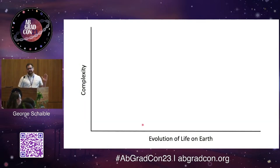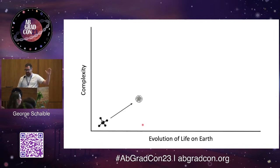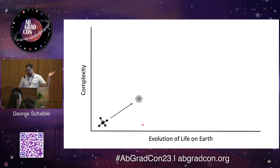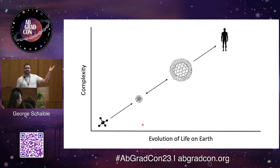Where I like to start is generally when we think about the evolution of life on Earth, we can think of it as an increase in complexity as life continued to evolve. This is an oversimplification, but thinking of it as molecules coming together to form a first cell and eventually getting a multicellular organism, and then something that looks like the life we have on Earth today.